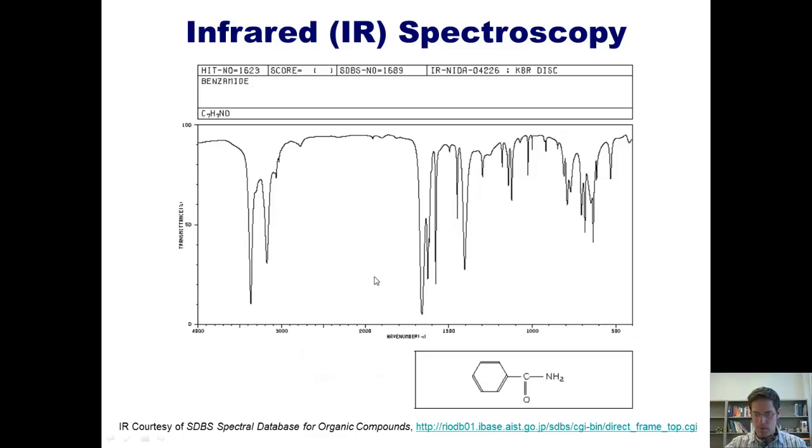Here's an IR of a primary amide. This is called benzamide. Like its primary amine counterpart, it gives two peaks right down here in the NH stretch region. And the most obvious addition, of course, is the presence of this carbonyl. Now one thing I should point out to you is it's really easy to remember that primary amines have two peaks down here, and primary amides as well, because there are two hydrogens on the nitrogen.